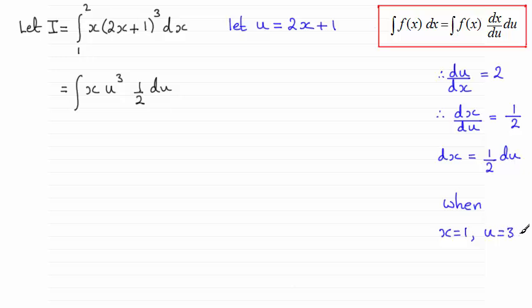And so we would put u equals 3 in the bottom there. And then we take the next value of x. That is when x is 2. And substitute that in here and get the corresponding value of u.